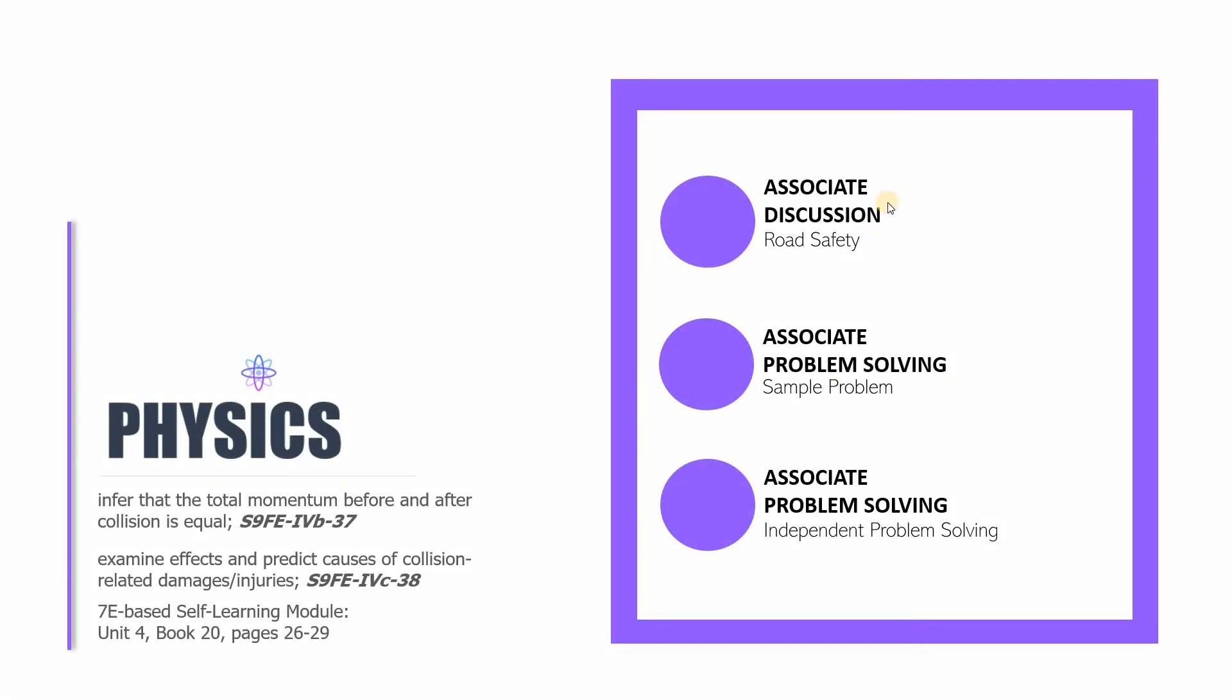Hello, this is Sir CJ and welcome to the 21st edition of Physics 9. In this version of Physics 9, we will cover the following parts: first is Associate on Discussion, and then we will be discussing important things about road safety, and then that discussion will lead us to the next part, which is connecting the concept of road safety into the problems that we have been discussing and solving in our sessions so far.